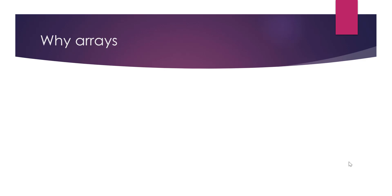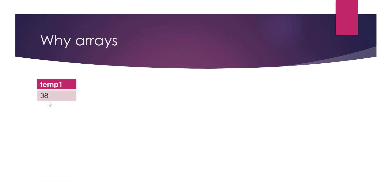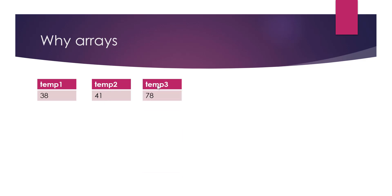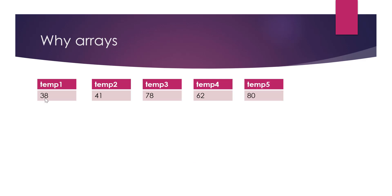Why do we need arrays? Let's say we want to store the temperature for five days. For each day we create a separate variable: temp1 stores 38, temp2 stores 41, temp3 stores 78, and so on for days four and five. We end up using five different variables to store the same type of data, even though they all represent the same kind of information.